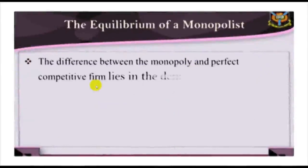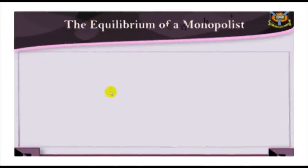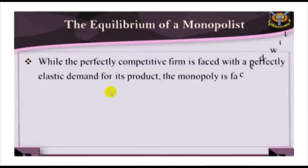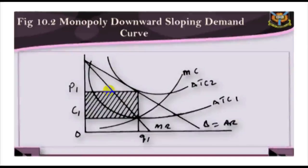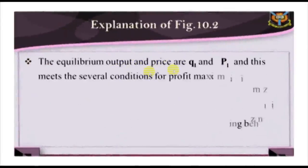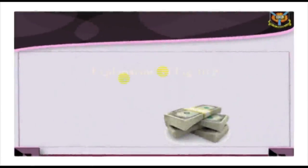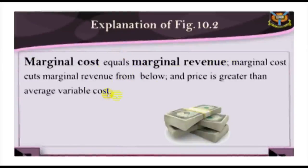The technological facts of life are the same for the monopoly as for a competitive firm, so the short-run cost curves have the same stages in both cases. The difference lies in the demand conditions. While the perfectly competitive firm faces a perfectly elastic demand for its products, the monopolist is faced with a downward-sloping demand curve. The equilibrium output and price are Q and P1. This equilibrium meets the conditions for profit maximization: marginal cost equals marginal revenue, marginal cost cuts marginal revenue from below, and price is greater than average variable cost.